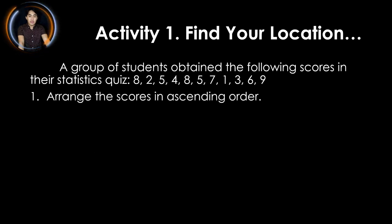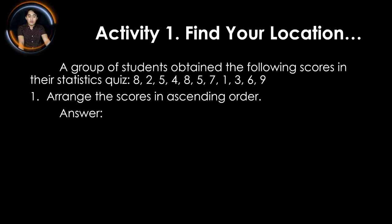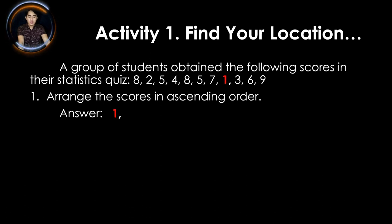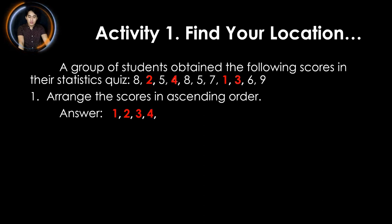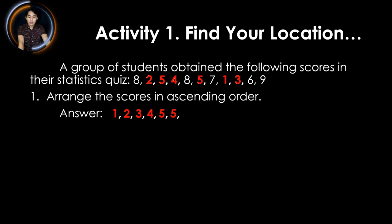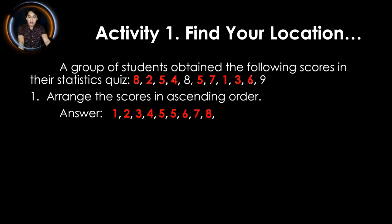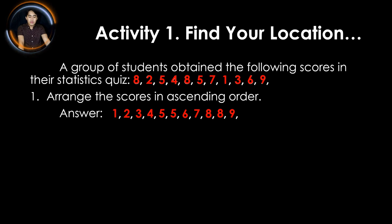Since it should be arranged in ascending order, we write the lowest number first: 1, 2, 3, 4, 5 — and take note there are two 5s, so we write another 5 — then 6, 7, 8 — and there is another 8 — then the last number is 9. So there are 11 numbers in total.